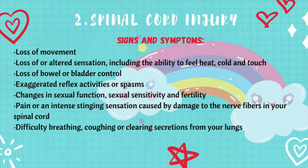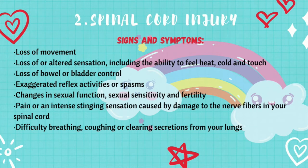When it comes to signs and symptoms, spinal cord injuries can cause one or more of the following. These signs and symptoms depend on the location and the severity of the injury on the spine: loss of movement; loss of or altered sensation, including the ability to feel heat, cold, and touch; loss of bowel or bladder control; exaggerated reflex activities or spasms; changes in sexual function, sexual sensitivity, and fertility; pain or an intense stinging sensation caused by damage to the nerve fibers in the spinal cord; and difficulty breathing, coughing, or clearing secretions from the lungs.